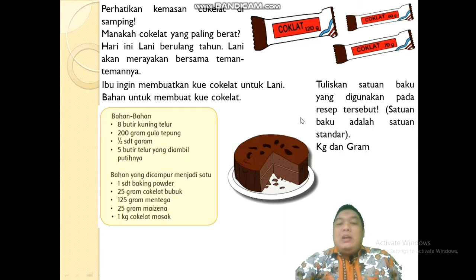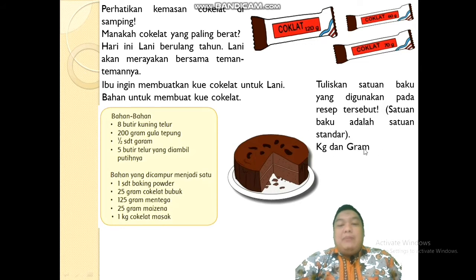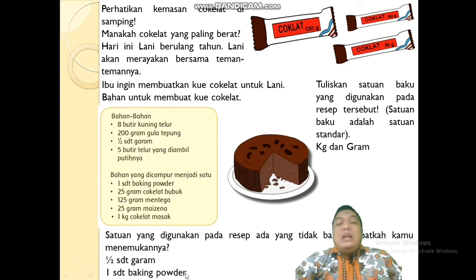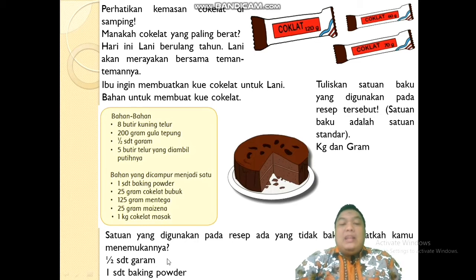Coba kalian tuliskan satuan baku yang digunakan pada resep tersebut. Ingat, satuan baku itu adalah satuan standar. Dalam resep, satuan bakunya adalah kilogram dan gram — itu adalah satuan baku untuk berat. Satuan yang digunakan pada resep di atas ada juga yang tidak baku, contohnya: setengah sendok teh garam dan 1 sendok teh baking powder. Itu adalah contoh dari satuan yang tidak baku, karena dari masing-masing orang pengambilannya tidak sama.